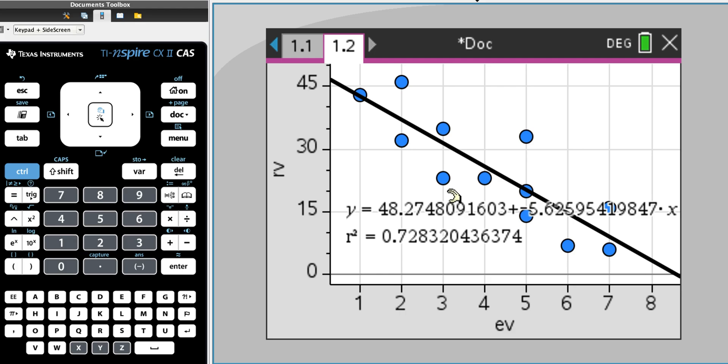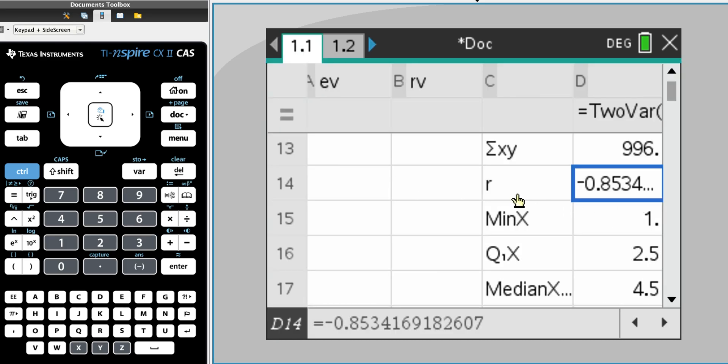Just underneath here, I also have my r-squared value. The r-squared value is the coefficient of determination. And as the name suggests, r-squared is simply the r-value from here multiplied by itself.